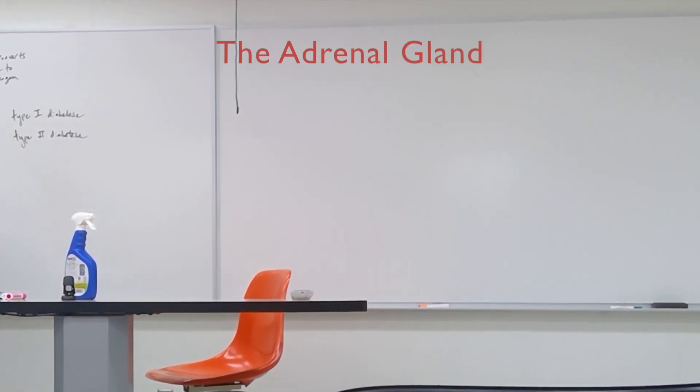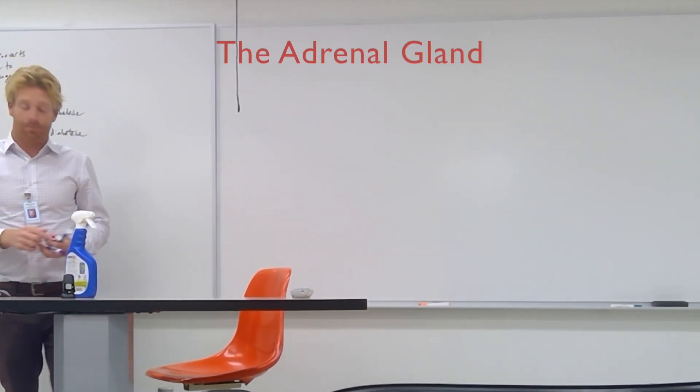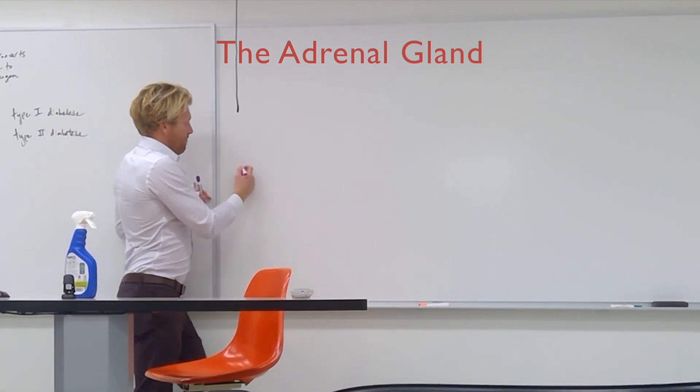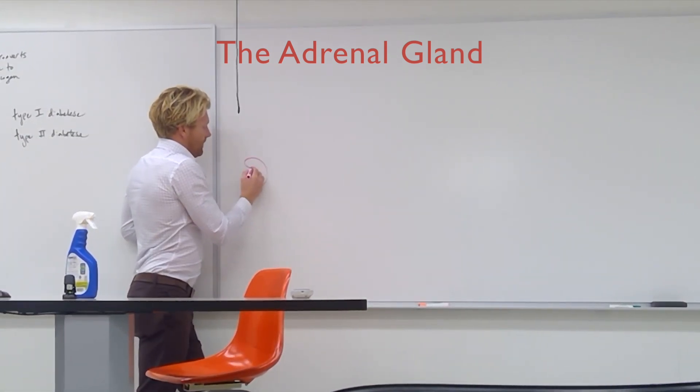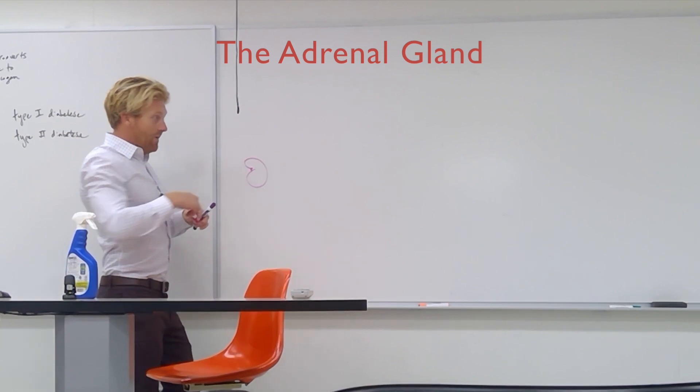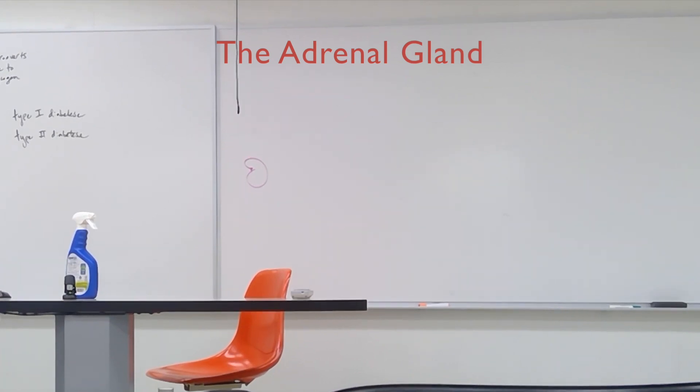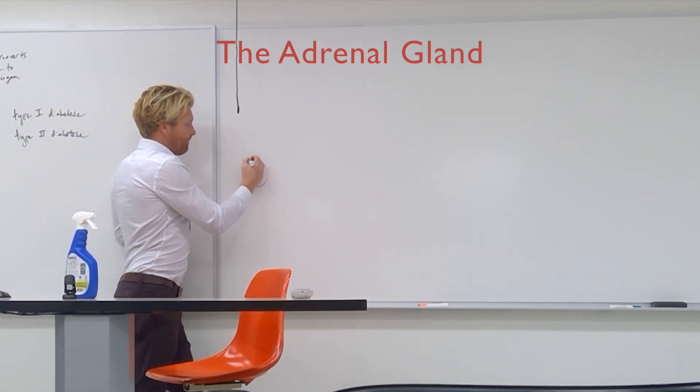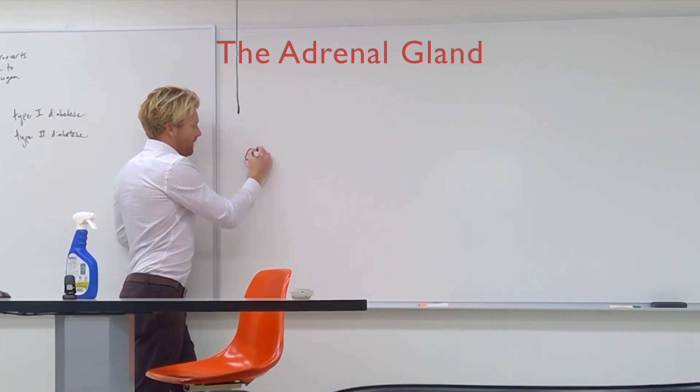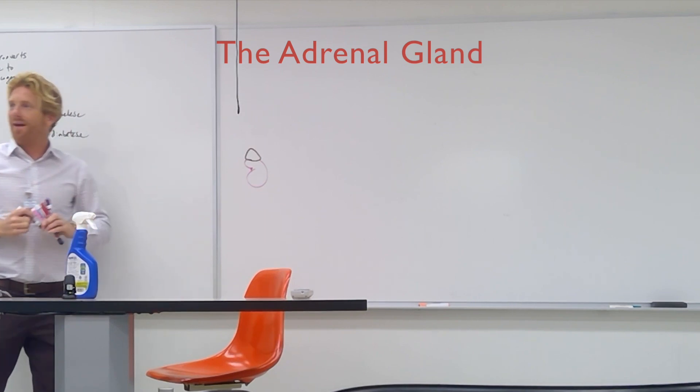The adrenal gland is an important gland. It sits right on top of the kidney. So there's a picture of the kidney, and the adrenal gland lies right on top of it. It's a little pyramid-shaped organ, maybe about that large. It sits on top of the kidney. Adrenal just means on top of the kidney, adrenal gland.